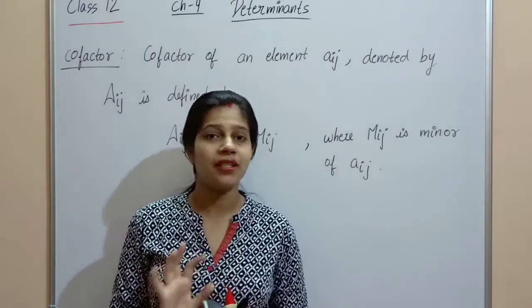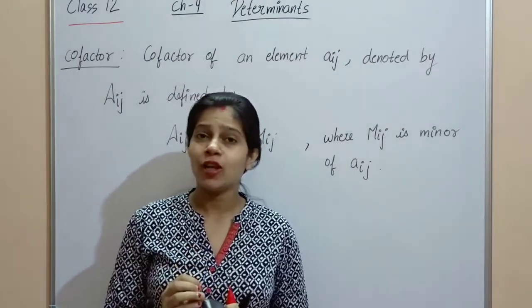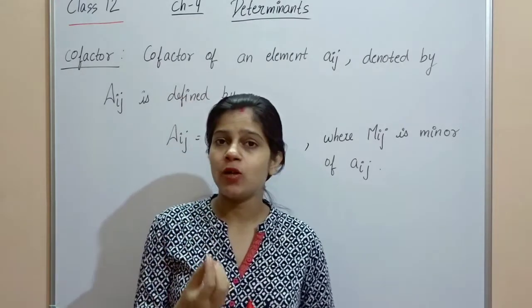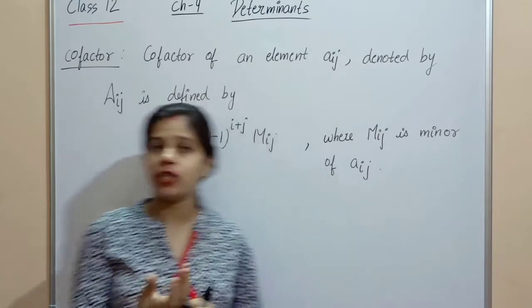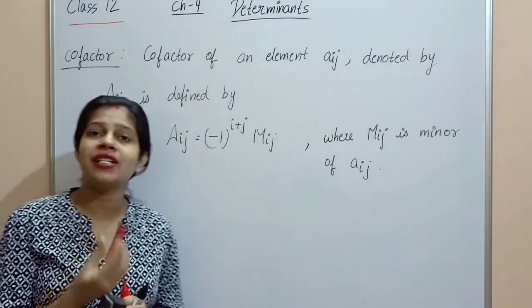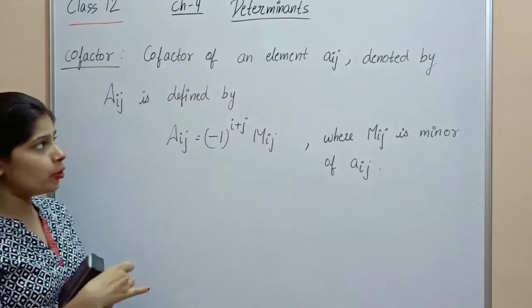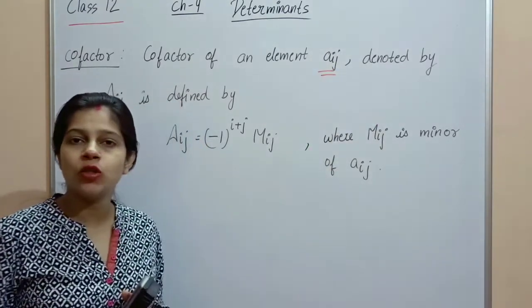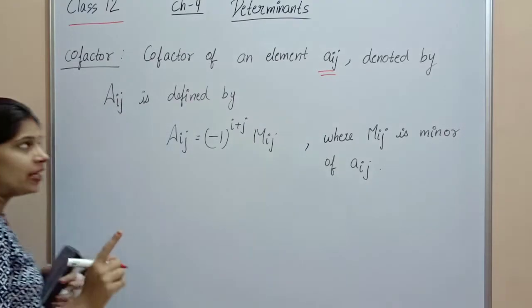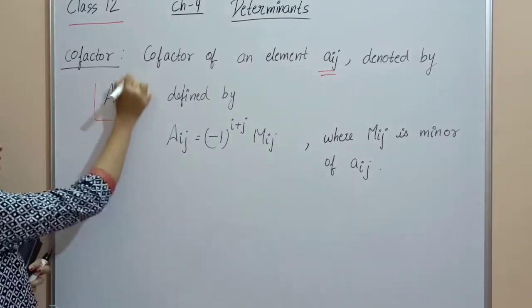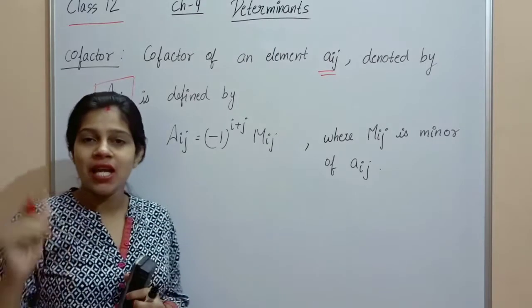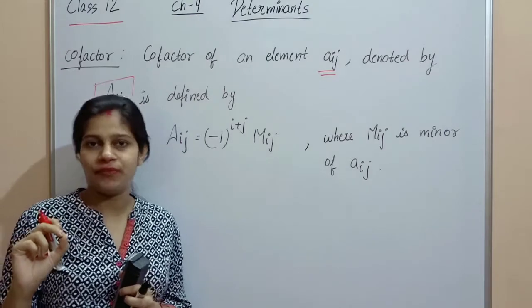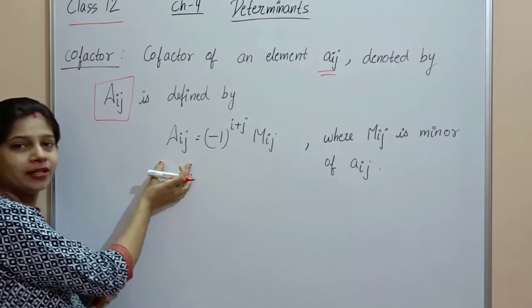Now let's learn about Co-factors. To find a co-factor, we first need the minor, and then make a small change. Co-factors are also found for elements of a determinant. The co-factor of element Aij is denoted by capital Aij. The minor of element Aij is denoted by capital Mij.